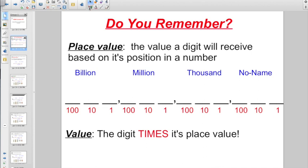What I really am interested in talking about and what's going to play into today, you've got to be able to differentiate the difference between place value or if they ask value. Remember, place value is the value a digit will receive based on its position in a number. Like if I just wrote in 1, 2, 3, 4, 5 here,